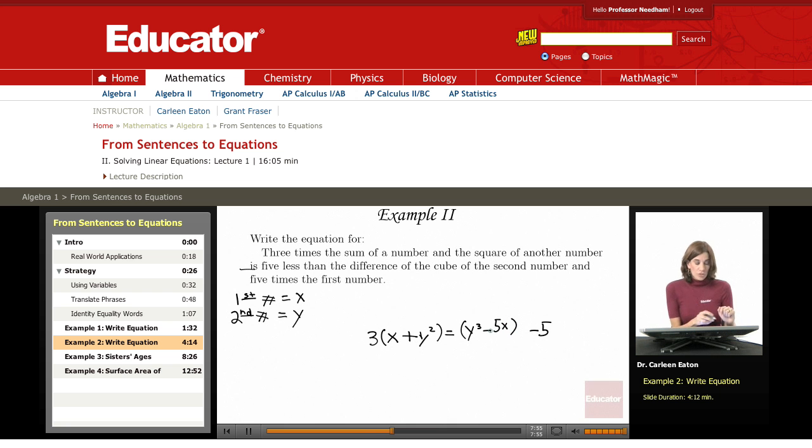Going back to check, three times the sum of a number and the square of another number. So three times x plus y squared equals five less than. So subtract five from the difference of the cube of the second number, y cubed, minus five times the first number, which is x. So this equation is translated from the sentence that we were given.